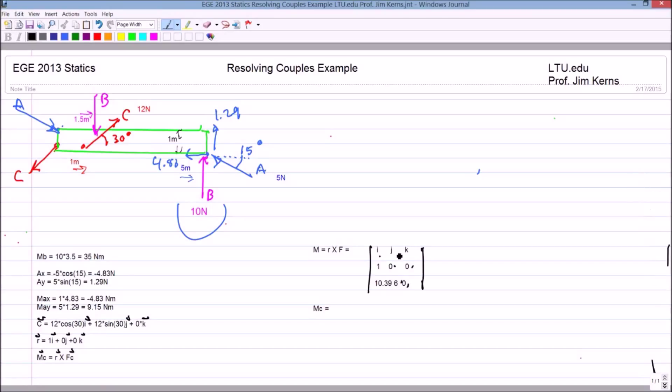The j component, one times zero minus zero times 10.39, those are both zero. The k component is one times six minus zero times 10.39, so that's just going to be six k.